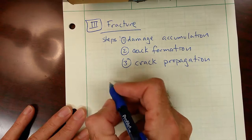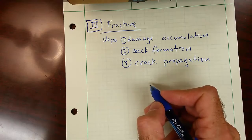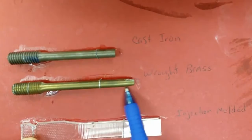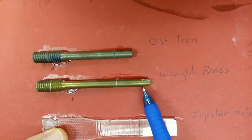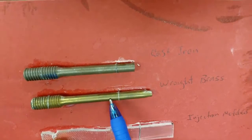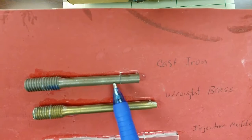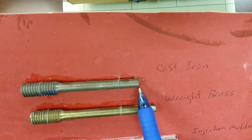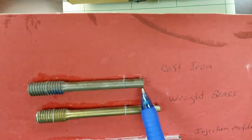The behavior of materials depends on their crystal structure and other aspects of their microstructure. Looking at two metal samples — the top one is cast iron, the bottom is wrought brass — we can see that in the case of the brass, there is some reduction in area right at the fracture point, greater than the reduction along the rest of the gauge length. Whereas for cast iron, the diameter at the fracture point is the same as the diameter away from the fracture point. This necking down before fracture is associated with ductility, and this lack of necking — fracture that occurs before necking — is associated with a material characteristic we call being brittle.